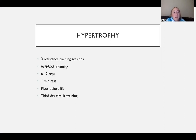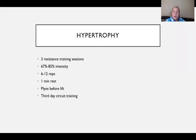The hypertrophy phase is similar to the strength endurance phase: three resistance training sessions at 67 to 85% intensity, with 6 to 12 reps and one-minute rest intervals. This is where plyometrics are introduced — one of the three plyo workouts is performed before each lift day, particularly before heavy lower body volume days. The third day remains circuit training to continue building endurance.